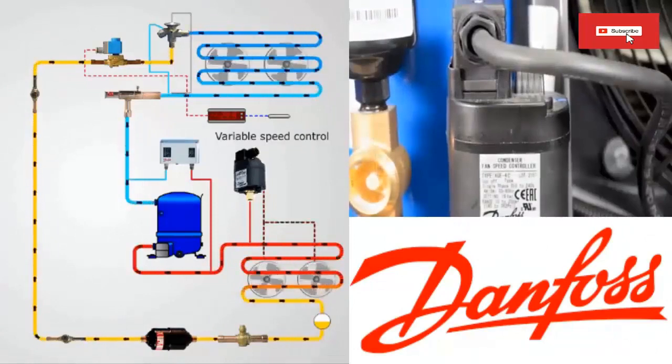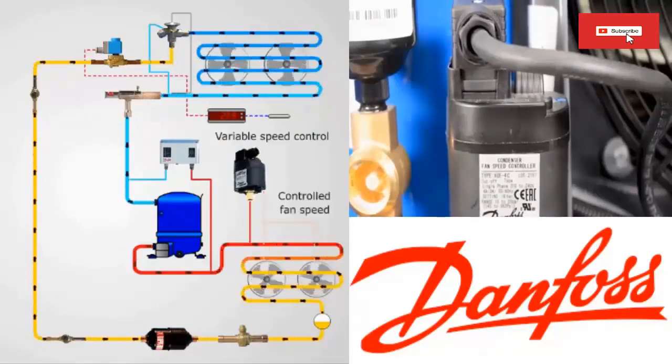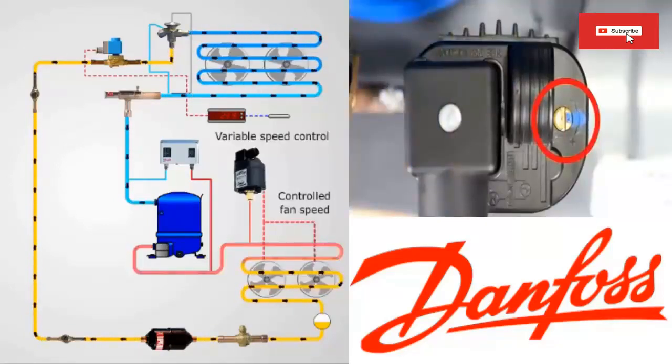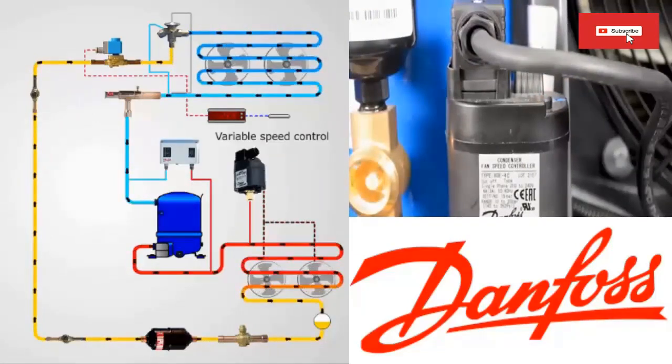These benefits include: 1. Improved Efficiency. The VSC can help improve the efficiency of an HVAC system by allowing the fan to run at the speed needed to remove heat from the condenser coil. This can save energy and money on energy bills.